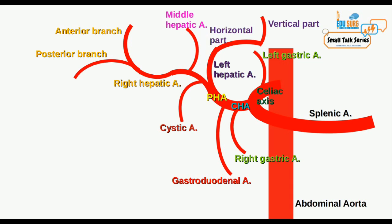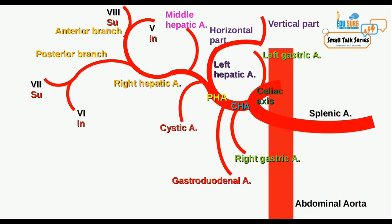The right hepatic artery also gives rise to the cystic artery and sometimes the middle hepatic artery. The anterior and posterior branches supply the respective right-sided segments: the right anterior branch gives a superior branch to segment 8 and an inferior branch to segment 5, while the right posterior artery gives a superior branch to segment 7 and an inferior branch to segment 6.